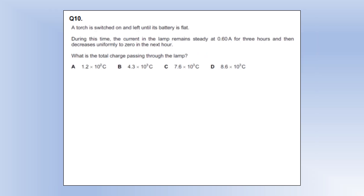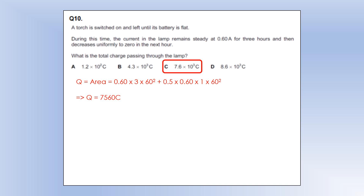A torch is switched on and left until its battery is flat — meaning it's run out of energy, not charge. The current is 0.6 amps for three hours, then decreases uniformly to zero for the next hour. We use the area under the graph: a rectangle for the constant-current phase and a triangle for the decreasing phase, giving us our total charge.